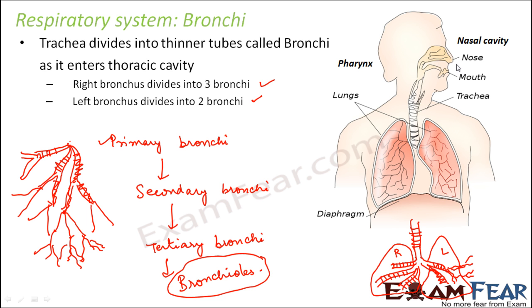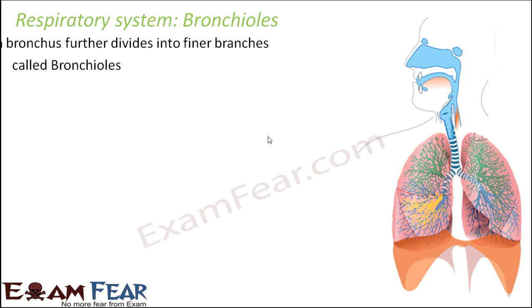Air follows this path: it comes inside through the nostrils, into the nasal cavity, then into the pharynx, then the trachea, then the bronchi, and then into the bronchioles. Once air enters the bronchi, it has entered the lungs, as bronchi are present inside the lungs. Inside the lungs, air moves from primary bronchi to secondary bronchi, then to tertiary bronchi, then to bronchioles, and finally to alveoli.